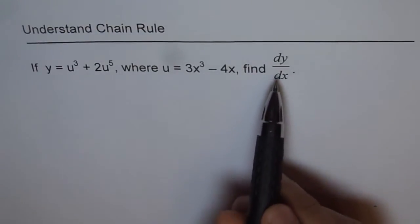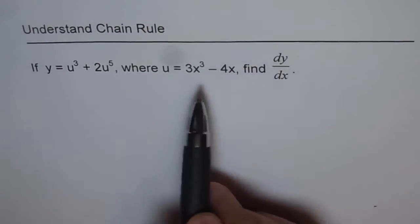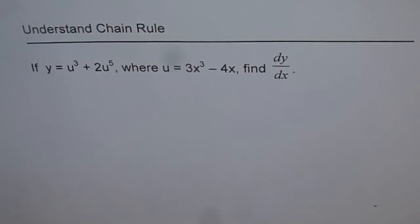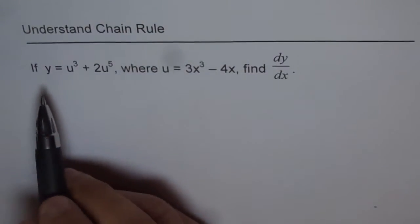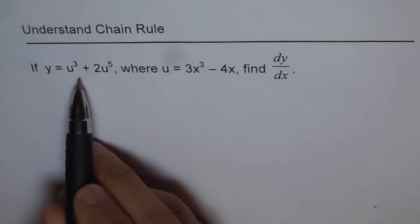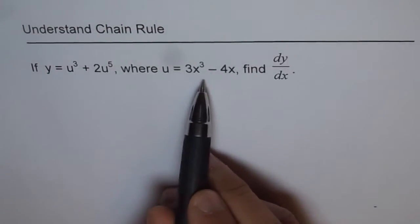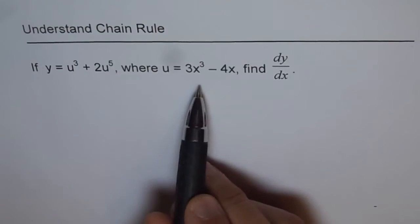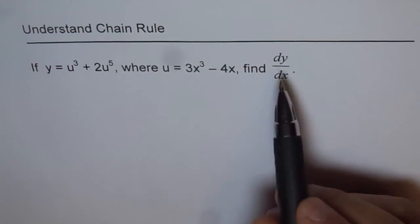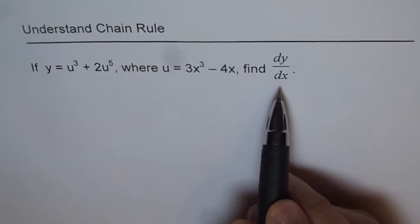We don't have a direct relation of y and x here, but we do have two relations. One, y is a function of u, and second, u is a function of x. By connecting these two, we can find the derivative of y with respect to x. See how.